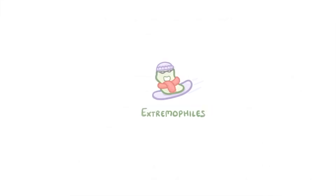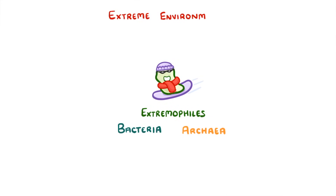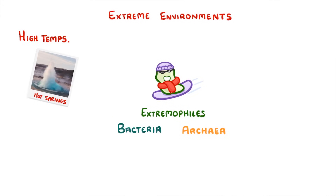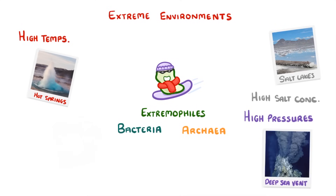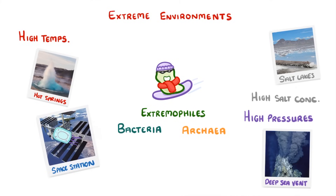The last thing we need to cover are extremophiles, which are microorganisms like bacteria or archaea that are adapted to live in extreme environments. For example, they can live at really high temperatures in hot springs, really high salt concentrations in salt lakes, and at really high pressures in deep sea vents, which are on the bottom of the ocean floor. And in 2017, astronauts even found bacteria on the outside of the International Space Station.